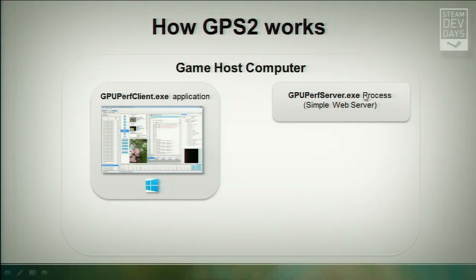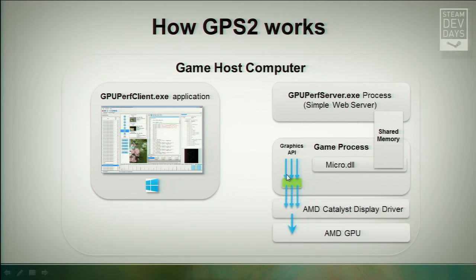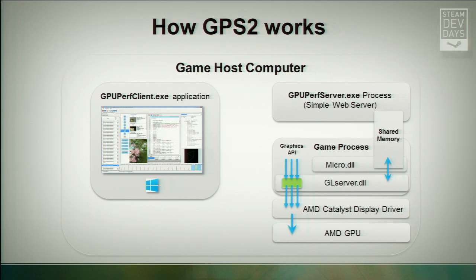How does Perf Studio work? The GPU Perf Client is a .NET app that only runs on Windows. We have a GPU Perf Server.exe, which is a simple web server responsible for starting your game. You give the server arguments to start your game process, and we append a DLL — or in Linux's case, a .so — as a micro DLL inside your game. This connects back to the web server using a shared memory system. When your game starts rendering with this graphics API, whether GL or DX, we detect those API calls and load a server — in this case a GL server — which is the main core engine for Perf Studio. This code records the API trace, performs the profiling, and generates the API trace, and has a hook into the shared memory system.